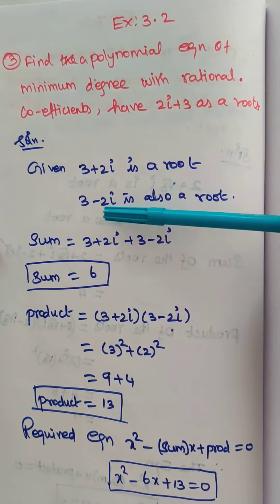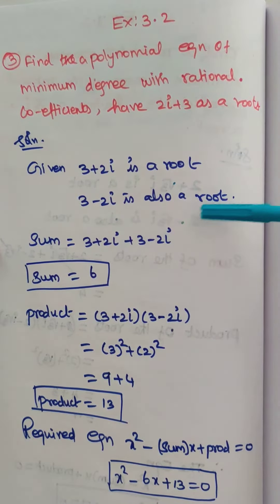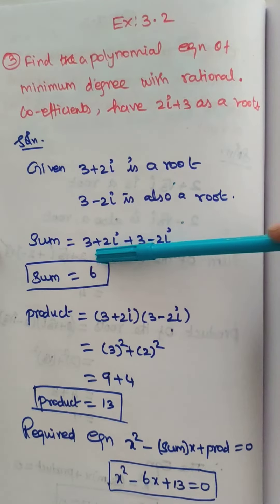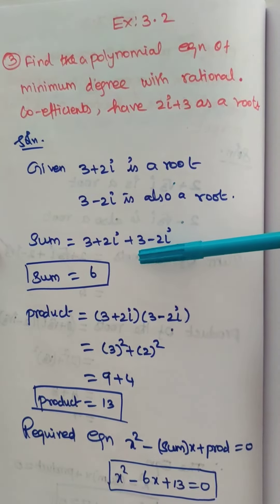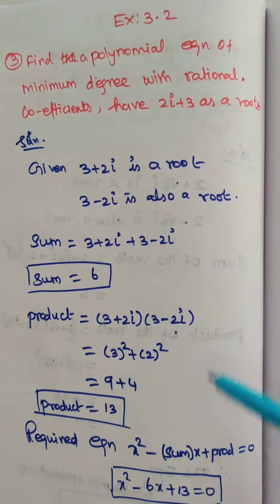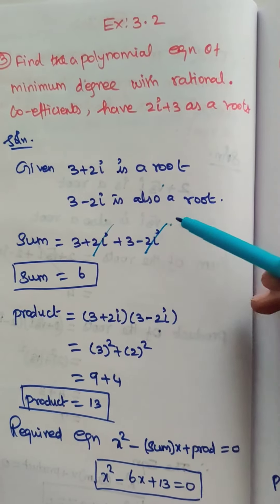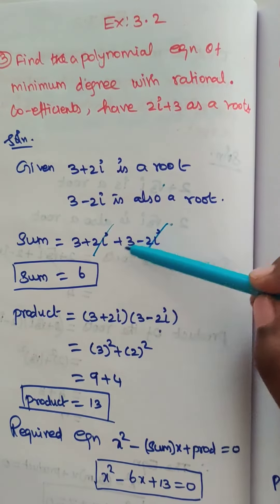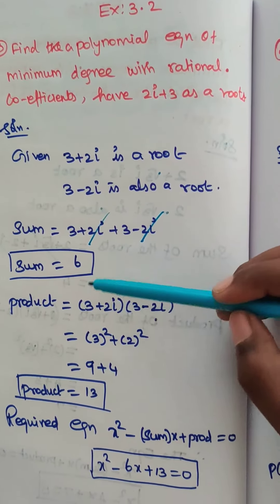Since 3 plus 2i is a root, then 3 minus 2i is also a root. The sum of the roots: 3 plus 2i plus 3 minus 2i. Here 2i minus 2i get cancelled, so 3 plus 3, which is equal to 6.